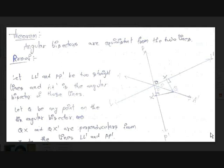First, before discussing that, for proving the main theorem we need another concept: that angular bisectors are equidistant from the two straight lines.